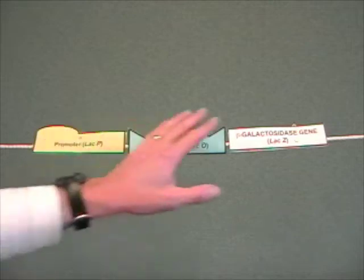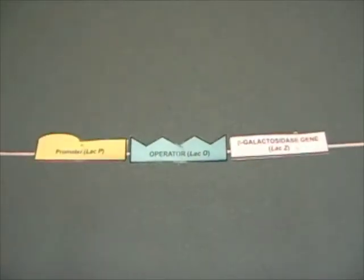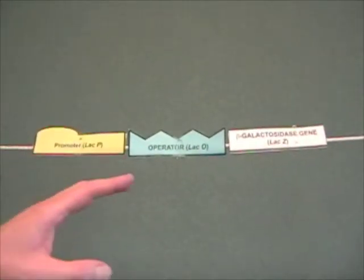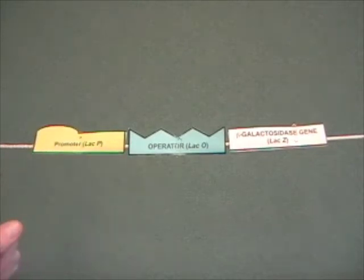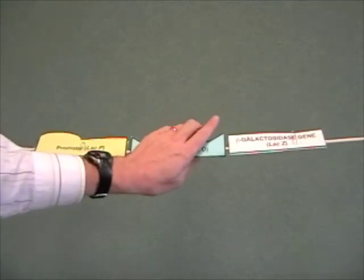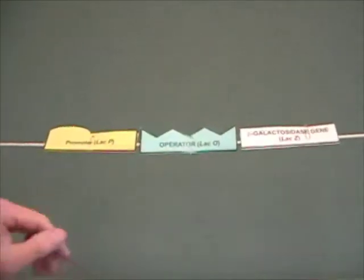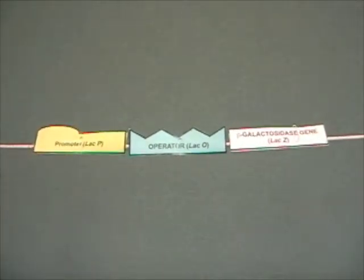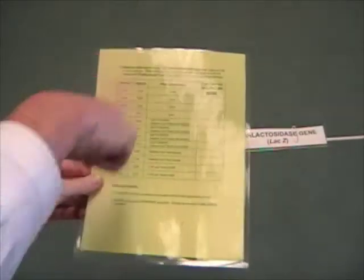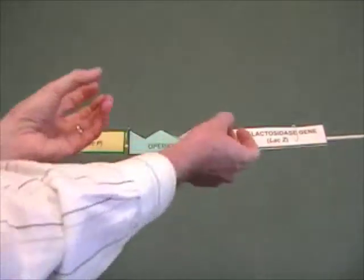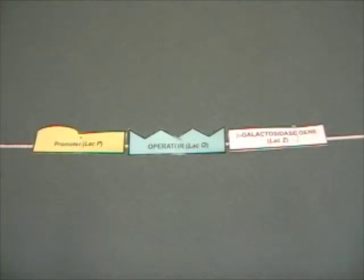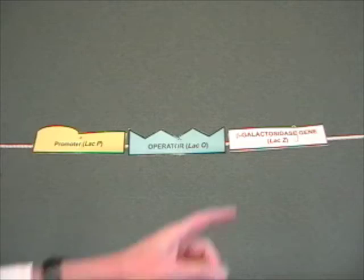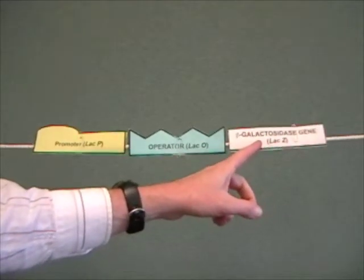Now, when you and your group get to lab, you're going to construct this model and go through what we just went through here. But then, you're going to think about the effect of mutations. For instance, what happens if you change the sequence of the operator or remove it completely? What happens if you change the sequence of the promoter? So, the lab is going to walk you through a bunch of different scenarios. And, you're going to manipulate this model to think about what some of the mutant phenotypes might be. And, always, you're going to be asking the same question. Is beta-galactosidase expressed or not?